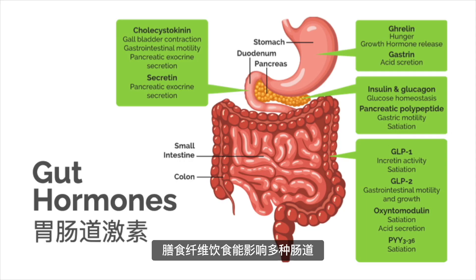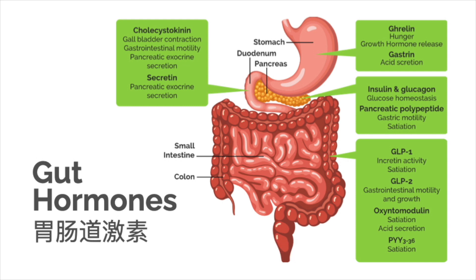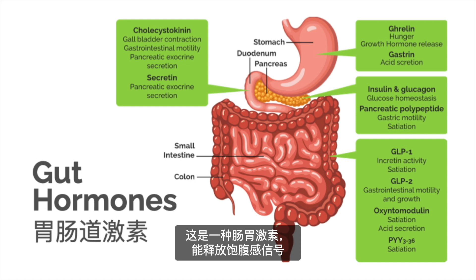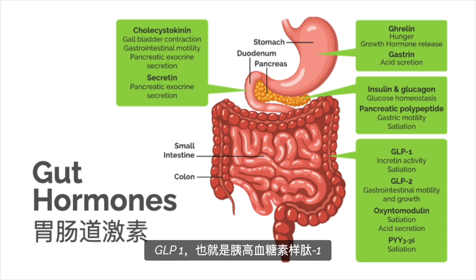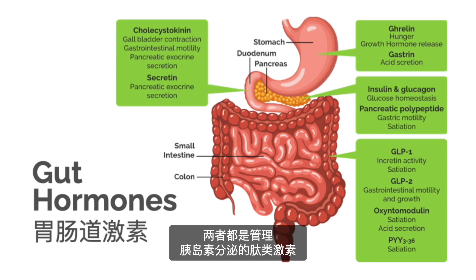Dietary fiber consumption affects the secretion of various gut hormones that act as satiety factors, namely CCK, GLP-1, GIP, and adiponectin. CCK, known as cholecystokinin, is a gut hormone that acts as a satiety signal. GLP-1, also called glucagon-like peptide-1, and GIP, known as glucose-dependent insulinotropic polypeptide, are both peptide hormones that regulate insulin secretion.